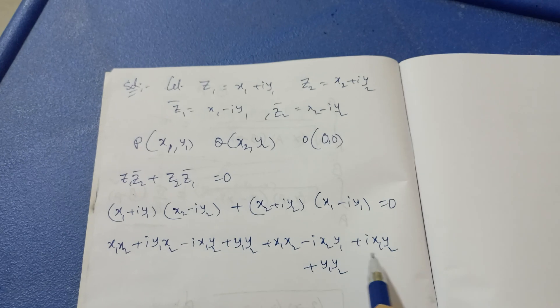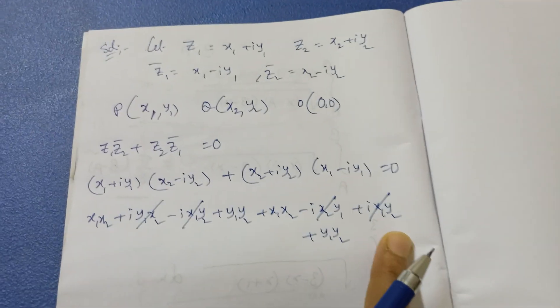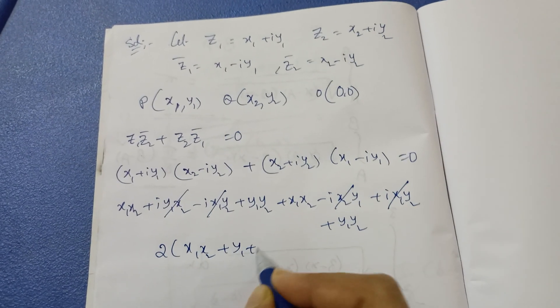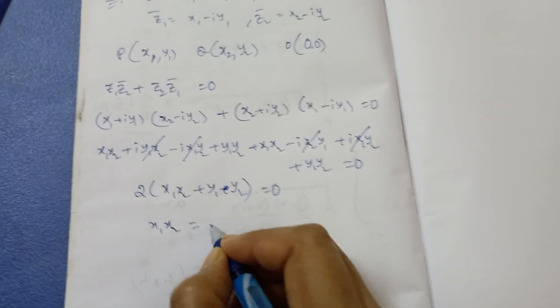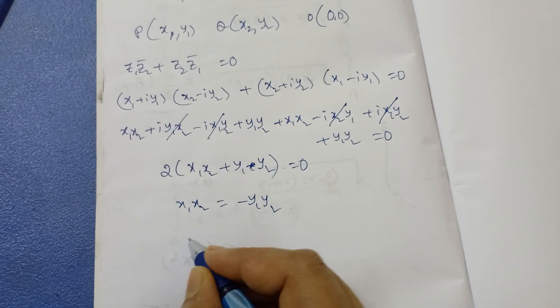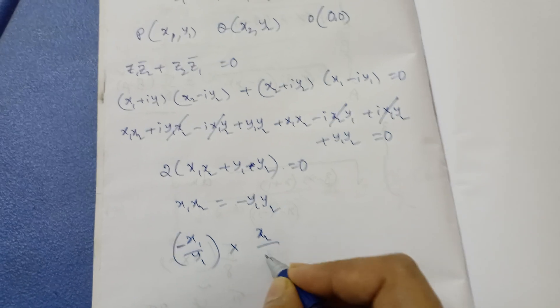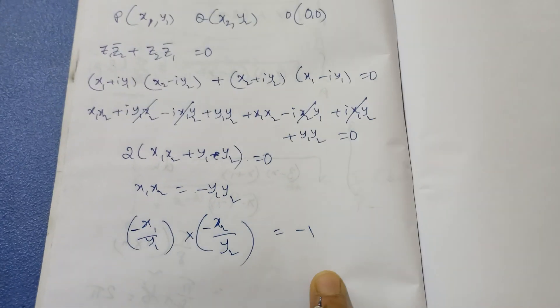After expansion, the imaginary terms cancel out — the +i·x2·y1 and −i·x2·y1 terms cancel, and so do the ±i·x1·y2 terms. We are left with 2(x1·x2 + y1·y2) = 0, which gives x1·x2 + y1·y2 = 0, or x1·x2 = −y1·y2.